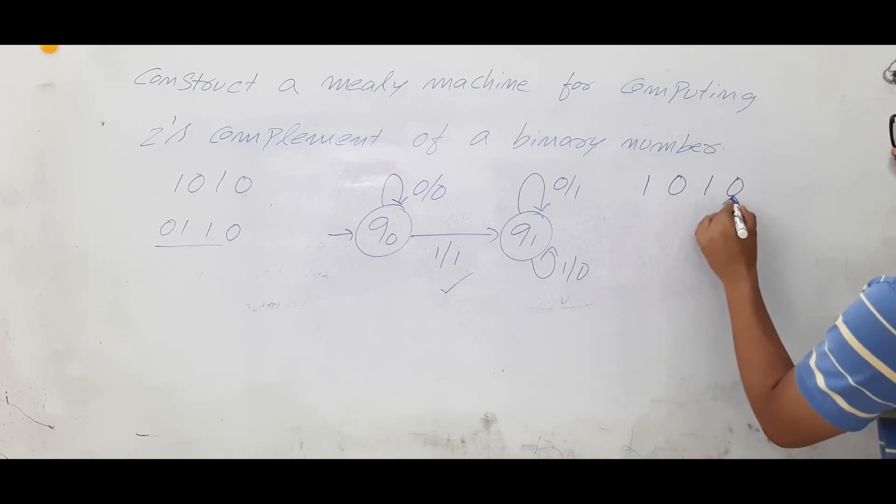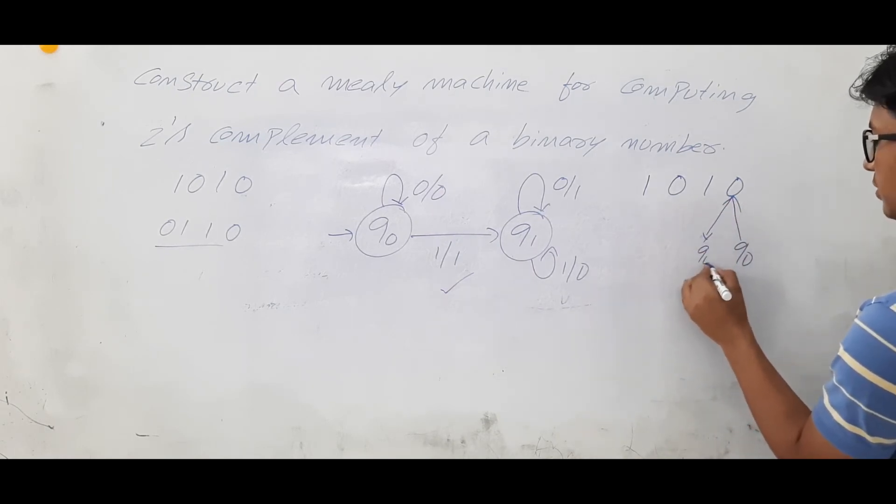I am in the initial state q0. From q0 on 0, where you are going? You are going to a state called q0 itself and what is the output you are generating? 0.